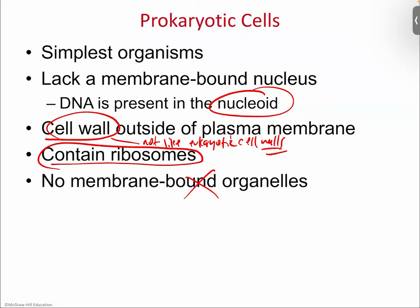Prokaryotes also have a cell wall, but not like eukaryotic cell walls, and they contain ribosomes. To get out of the gate as a living cell, there are a few things you must have: a cell membrane, DNA — without DNA you're as good as dead — and ribosomes. Ribosomes are the factories that make proteins. Without ribosomes you can't make proteins; without proteins you can't do any of the jobs every cell must do, which means you can't answer the big biological questions of life. Those are the minimal requirements.